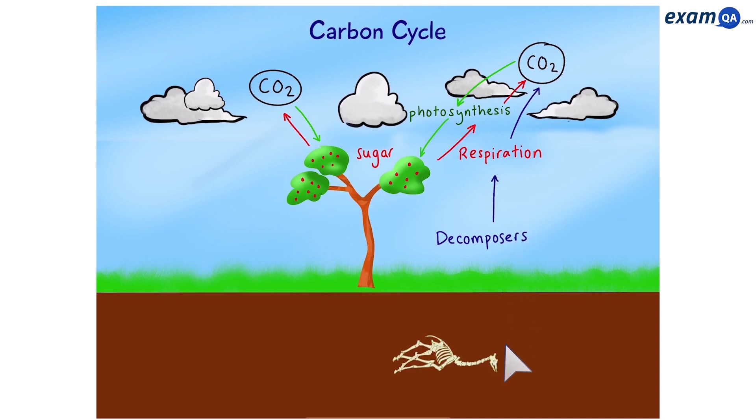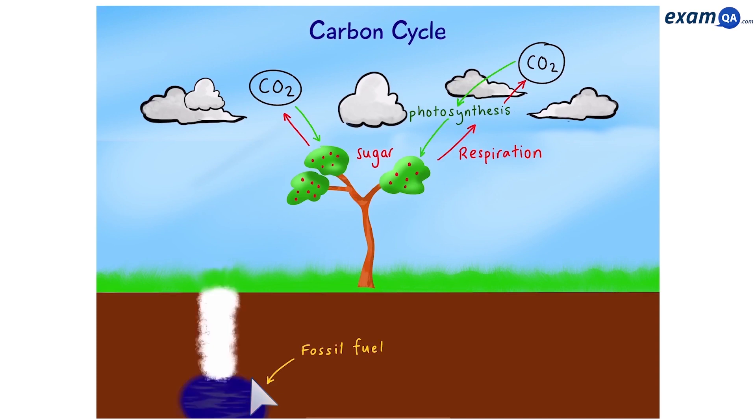As for the animals now we just have the bones left. These bones get crushed over millions and millions of years and eventually turn into a black dark liquid called fossil fuels or crude oil.